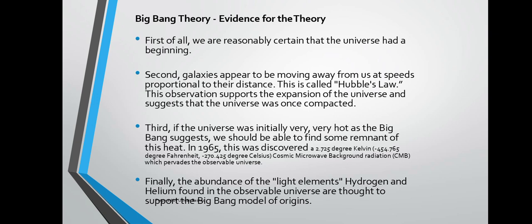Hubble's Law also suggests that the universe was once compacted — all space was compacted in the primordial core. Third, if the universe was initially very hot, as the Big Bang suggests, we should find some remnant of that heat. In 1965, microwave background radiation at 2.75 degrees Kelvin, which pervades the observable universe, was discovered. Finally, the abundance of hydrogen and helium in the observable universe supports the Big Bang model of origins.